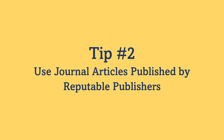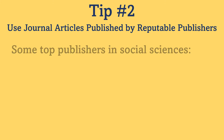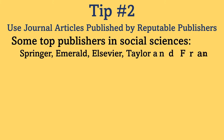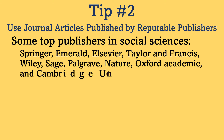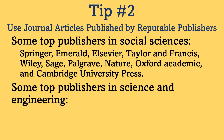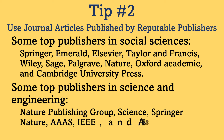Tip number two: use journal articles published by reputable publishers. I strongly recommend using journal articles published by prestigious publishers to develop your literature review. The top publishers in social sciences are Springer, Emerald, Elsevier, Taylor and Francis, Wiley, Sage, Palgrave, Nature, Oxford Academic and Cambridge University Press. There are other publishers in science and engineering like Nature Publishing Group, Science, Springer Nature, AAAS, IEEE and ASME that can be added to the list too. There are other reputable publishers as well that you can search online to find.